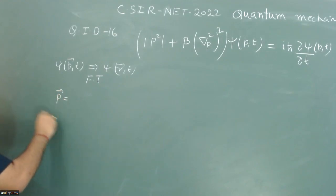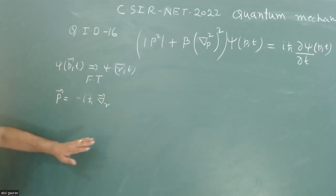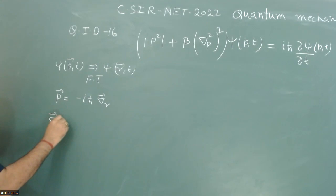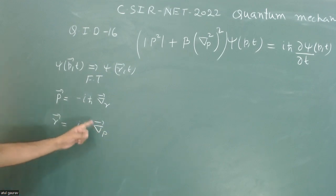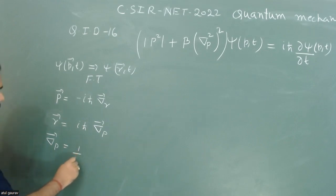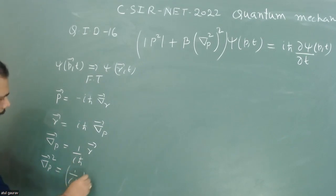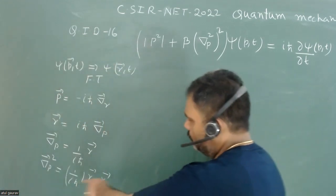My momentum p can be written as minus iℏ ∇_r. And if we want to change del_p, my position vector r can be written as iℏ ∇_p. As a result of Fourier transformation, del_p can be written as (1/iℏ) r-vector. So del_p squared equals (1/iℏ r) dot (1/iℏ r), since del_p squared equals del dot del.